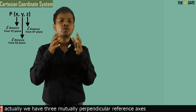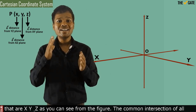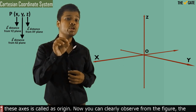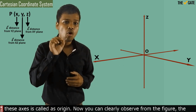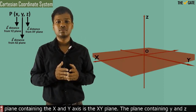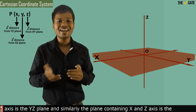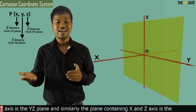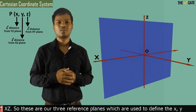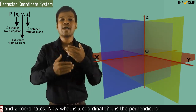We have three mutually perpendicular reference axes: X, Y, and Z, as you can see from the figure. The common intersection of all these axes is called the origin. The plane containing the X and Y axes is the XY plane. The plane containing Y and Z axes is the YZ plane. Similarly, the plane containing X and Z axes is the XZ plane. These are our three reference planes used to define the X, Y, and Z coordinates.